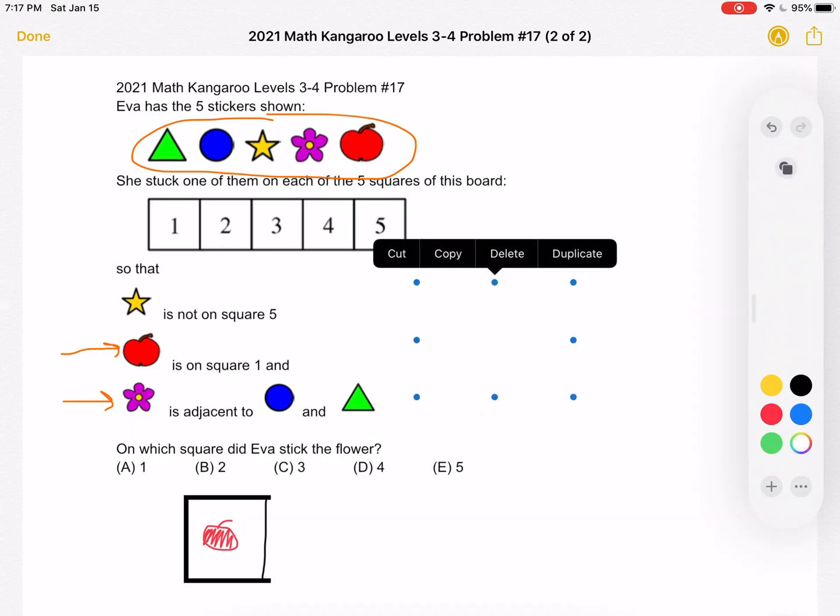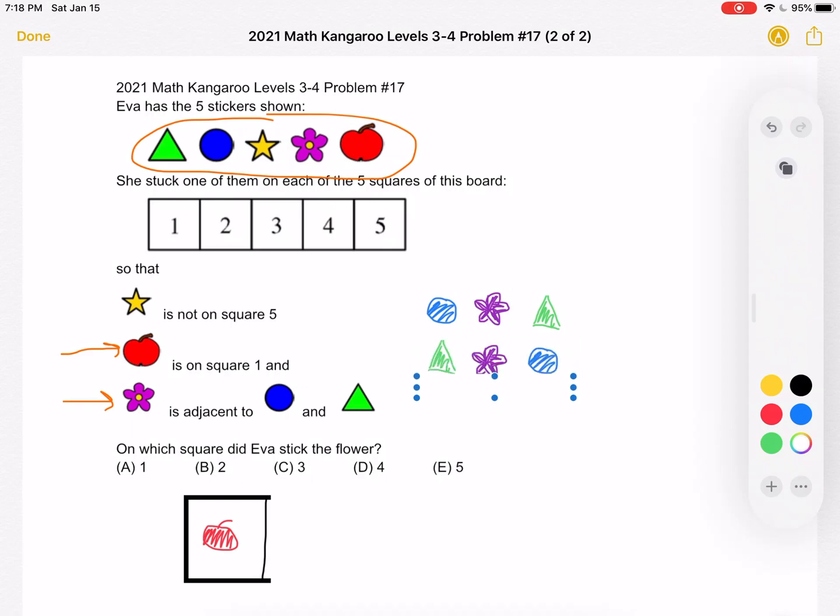We have two options. Either we have the circle, flower, triangle or we have the triangle, flower, circle. But we know that we have that set of three placed together on the squares of this board.